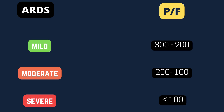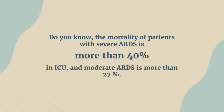It's simple. Mild ARDS is when the P/F ratio is between 200 to 300. If it is between 100 to 200, it's moderate, and if less than 100, it will be severe ARDS. The mortality of patients with severe ARDS is more than 40% in the ICU, and moderate ARDS is more than 27%.